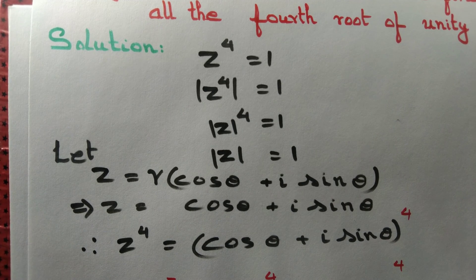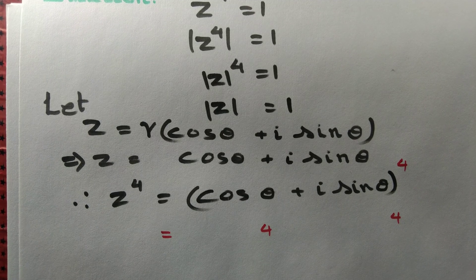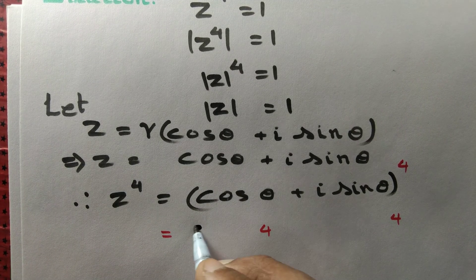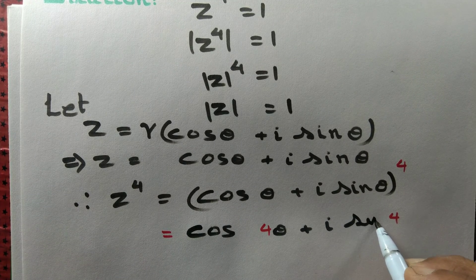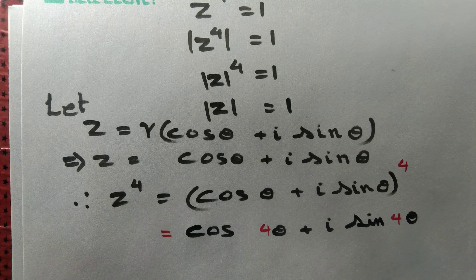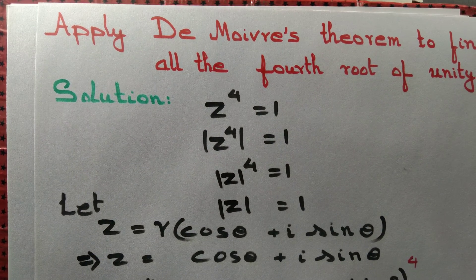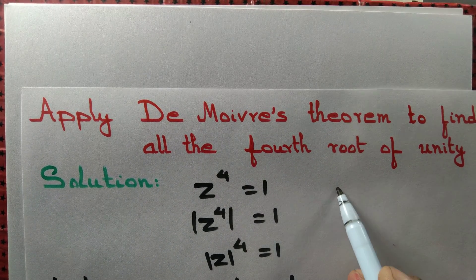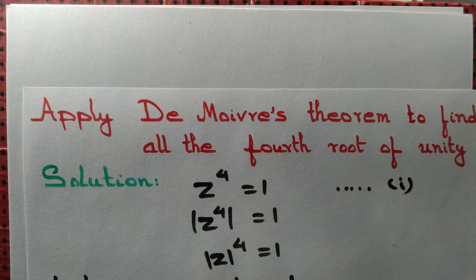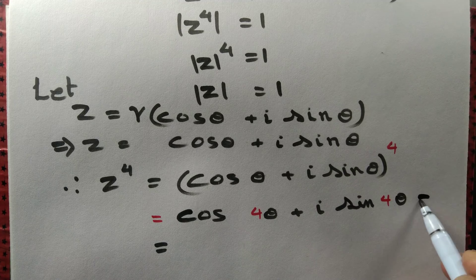De Moivre's theorem has the advantage that we can simply multiply the power with the angle, so we get z to the power 4 equals cos4θ + i sin4θ. But by equation 1, we are given z to the power 4 equal to 1, so we can write cos4θ + i sin4θ equal to 1.